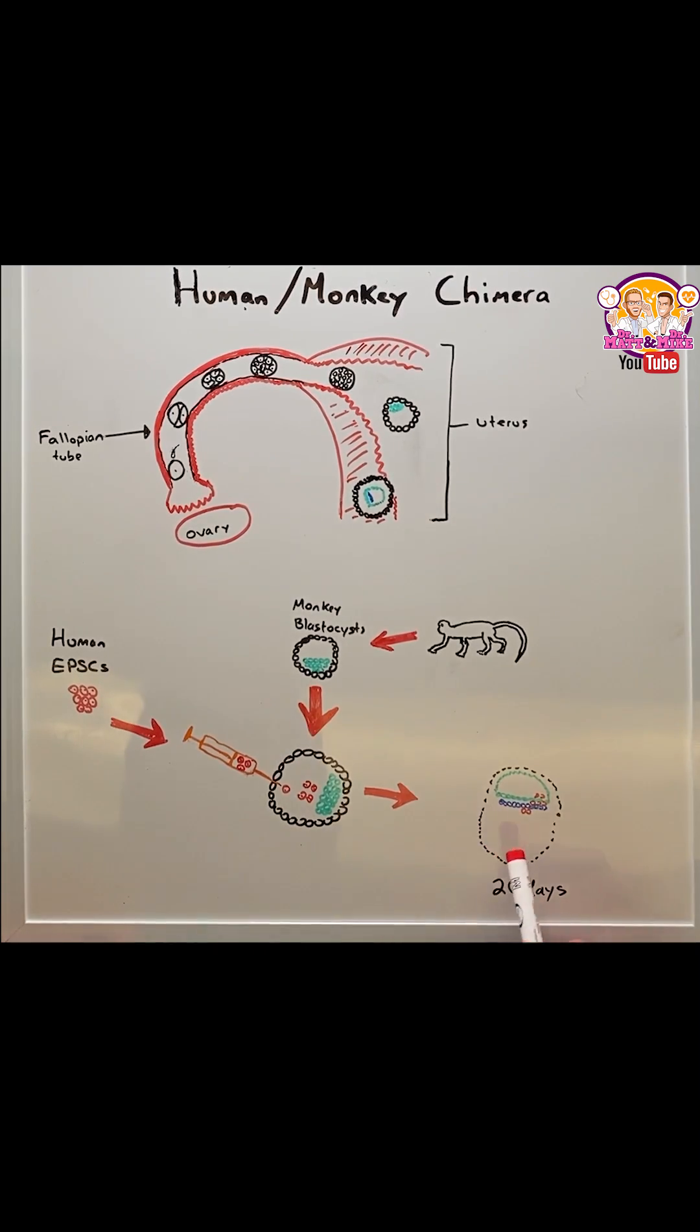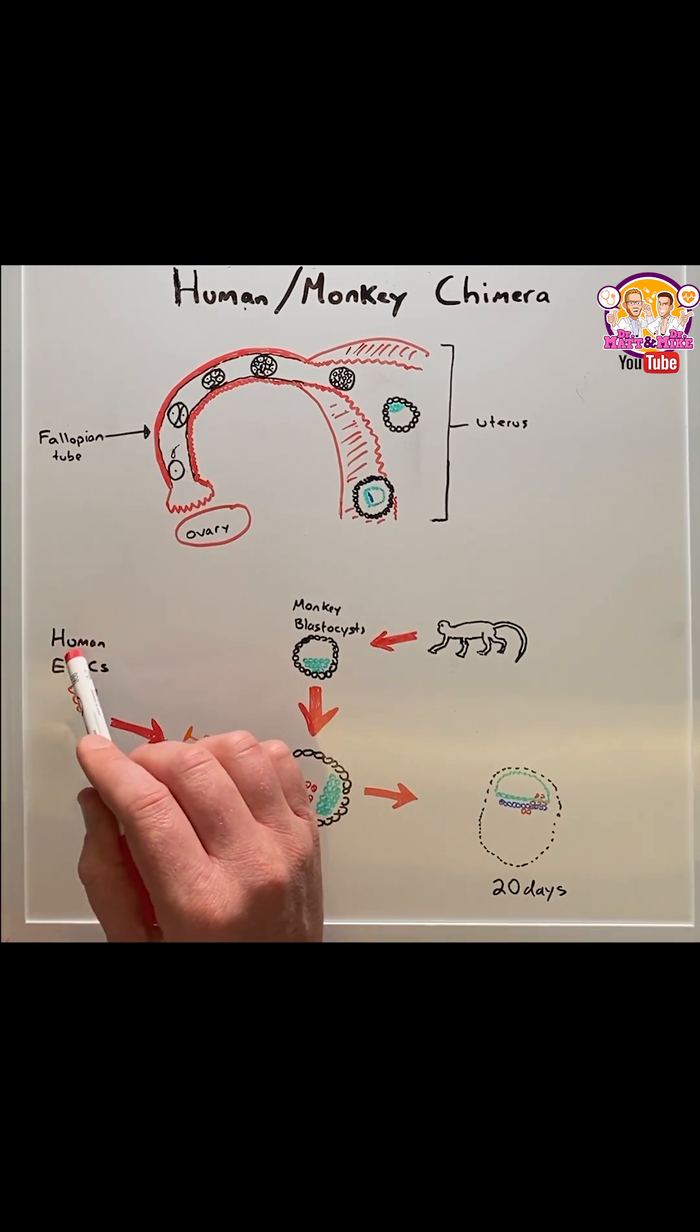After twenty days they found that seven percent of the embryo could be traced back to the human stem cell line.